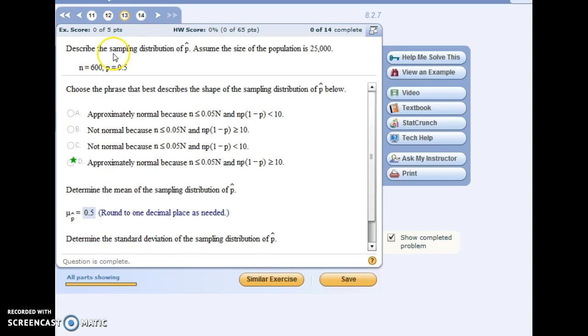For number 13, we're looking at the sampling distribution of p-hat, which stands for the sample proportion. We're given information about the entire size of the population, we're told what n is, which is the size of the sample, and we're given the proportion for the population. So it's 0.5 or 50%. Whatever it is we're measuring here, 50% of the population falls into that category.